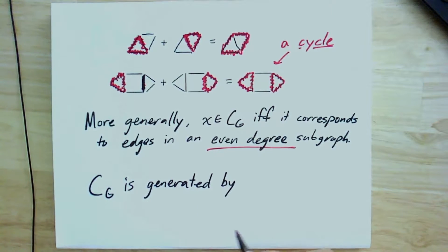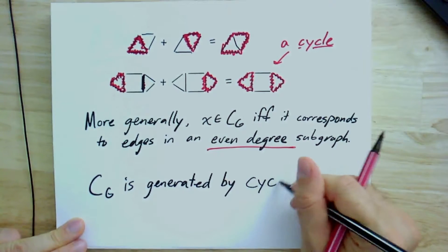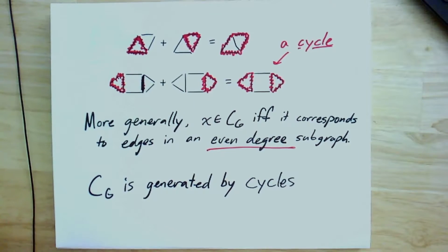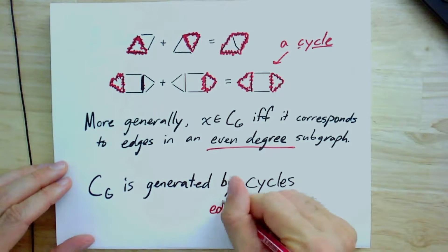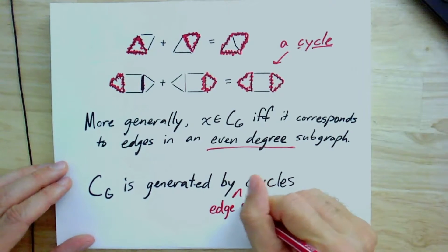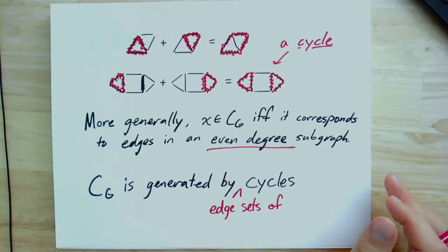So really, CG, it turns out, is generated by cycles, but it's not itself all the cycle graphs. And again, let me just be clear, I really mean the edge sets of cycles.